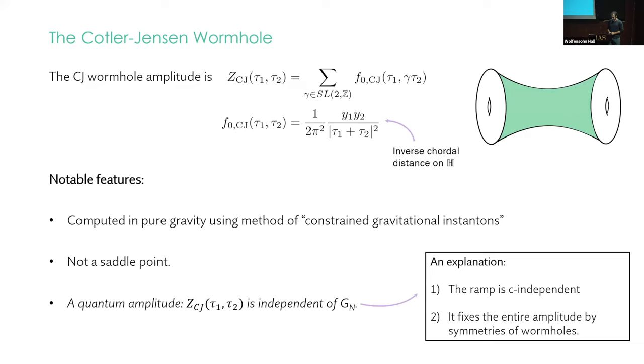Okay. Another comment. Let's return to this point here, the fact that it's independent of G Newton. This gives a kind of explanation. First of all, the ramp is C independent, right? The slope of the ramp is just a number dictated by the random matrix ensemble. One, two, four. But as we discussed, the symmetries of wormholes are so strong that the ramp fixes the entire amplitude. So the whole amplitude is independent of C.